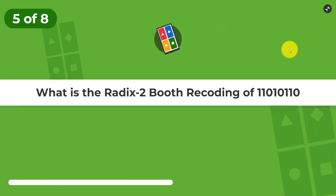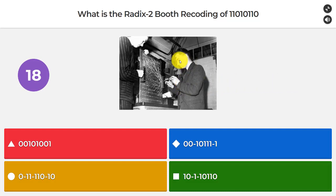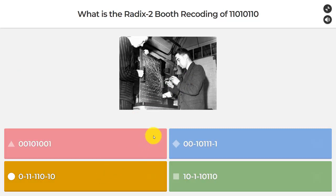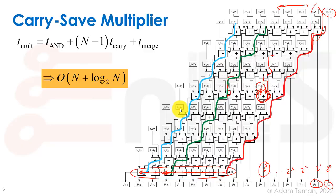Question number five: what is the Radix 2 Booth recoding of 1, 1, 0, 1, 0, 1, 1, 0? Here are four possible answers. That's Andrew Booth, a researcher at Manchester who developed this recoding technique. The correct answer is: 0, −1, 1, −1, 1, 0, −1, 0.